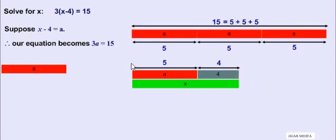So from this diagram we come to know that x is actually a sum of 5 and 4. So x will be equal to 9. So that's how we can solve a linear equation. Thank you.